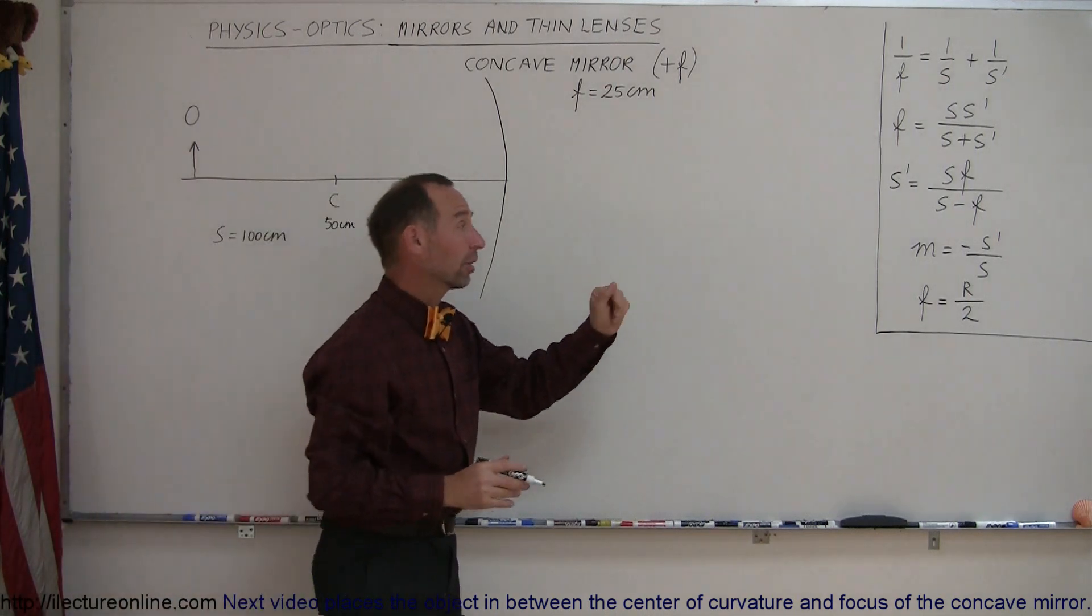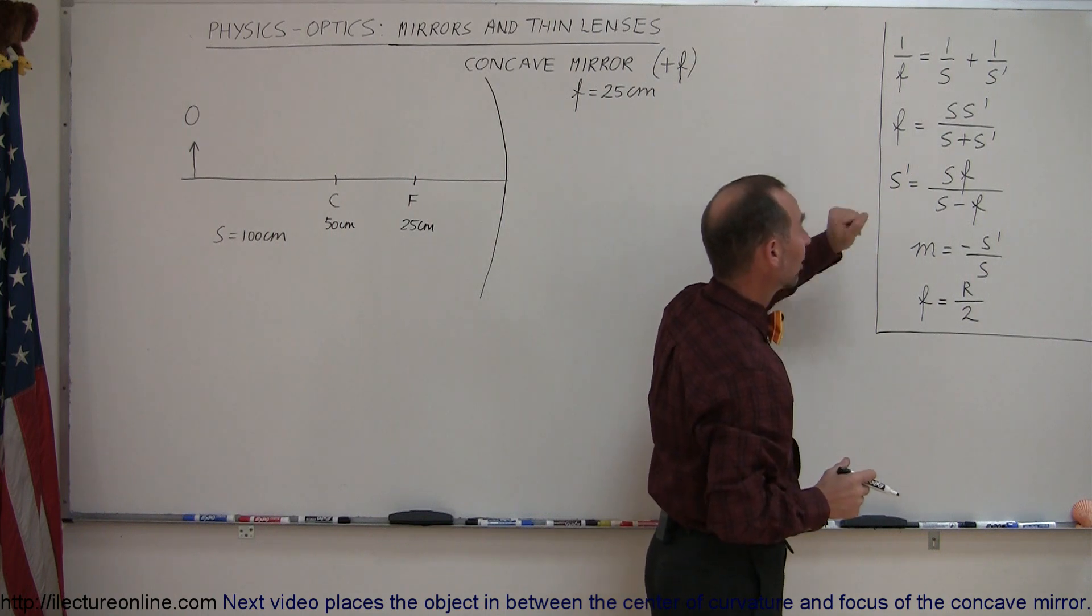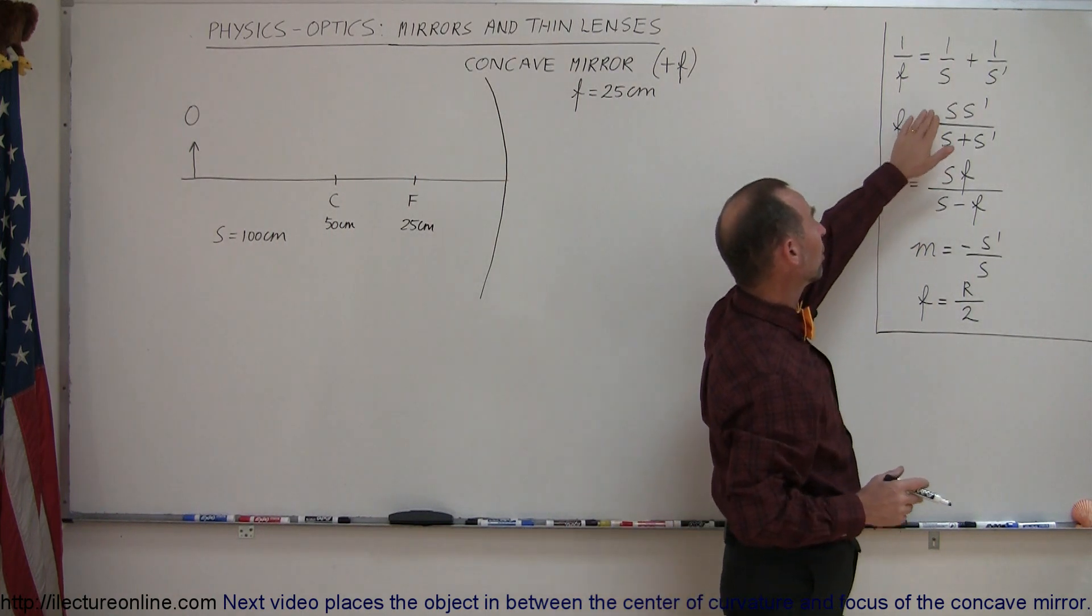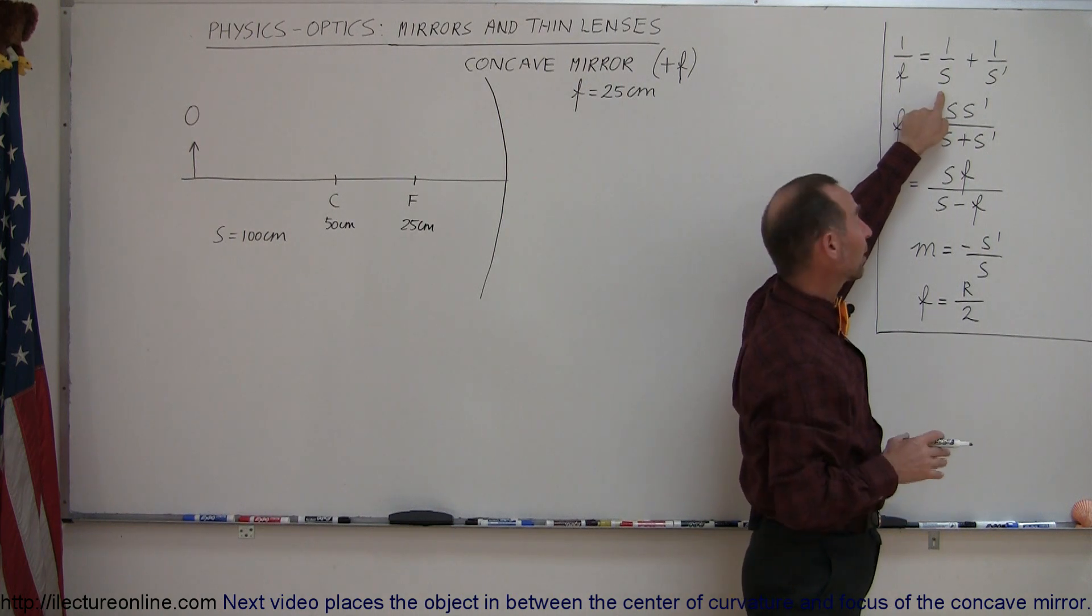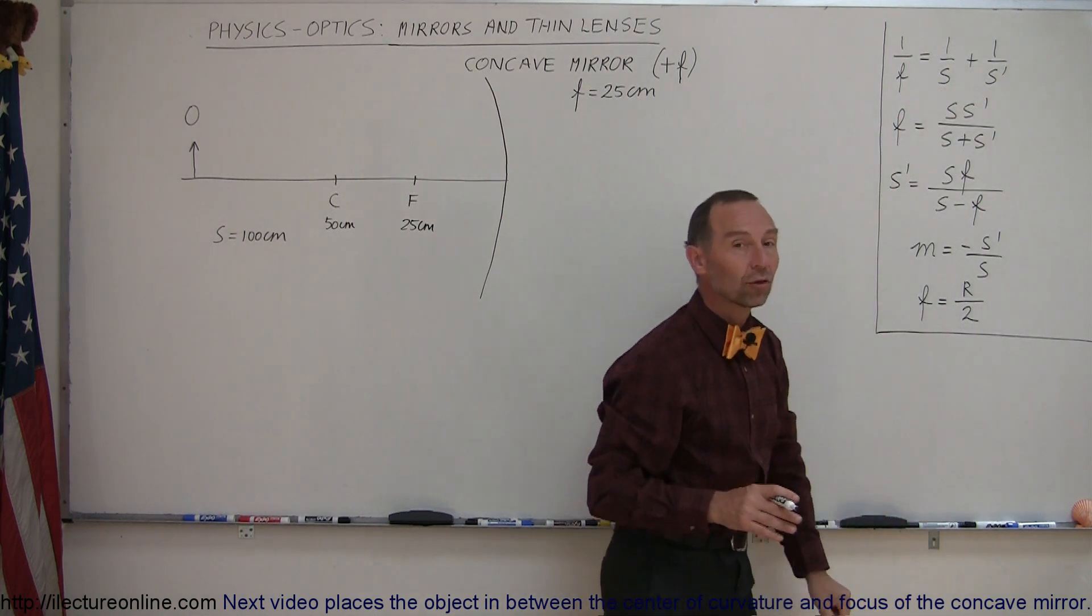I have some equations here on the board that will help us find out what some of these things are. The way I use it is that F stands for focal length, S stands for the distance to the object, and S' stands for the distance to the image.